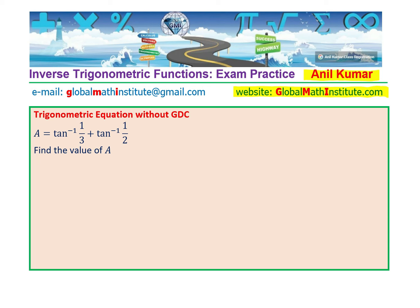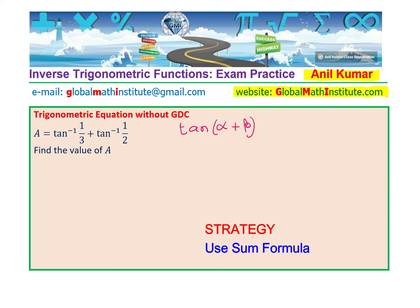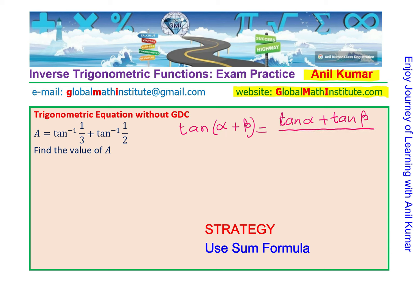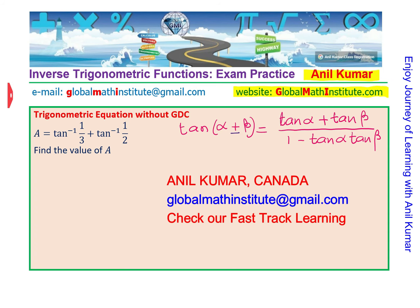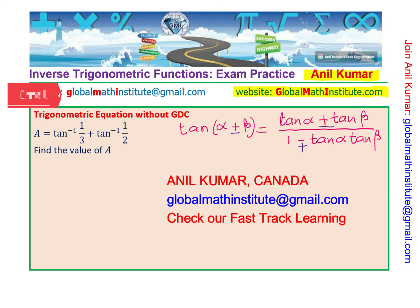To solve this particular type of equation, we need to understand the tan addition formula: tan(α + β) equals tan α plus tan β over 1 minus tan α·tan β. If we have minus here, the signs reverse and the formula changes accordingly. With this formula, you can actually solve all four questions.